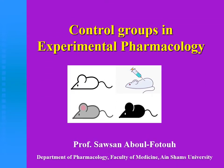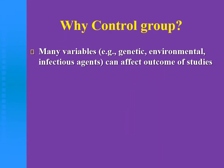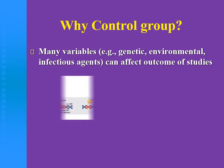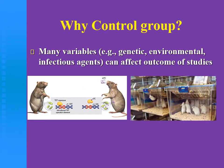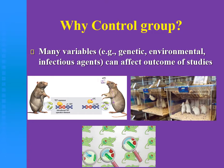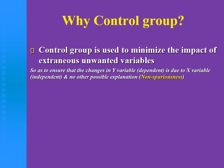Assalamu alaikum. Now we are going to discuss control groups in experimental pharmacology. First, why do we use control groups? There are many variables such as genetic, environmental, or infectious agents that may affect the outcome measures in our studies. We use control groups to minimize the impact of exogenous unwanted variables.